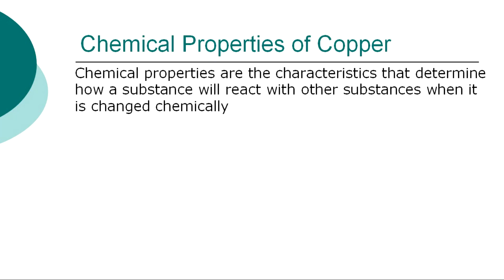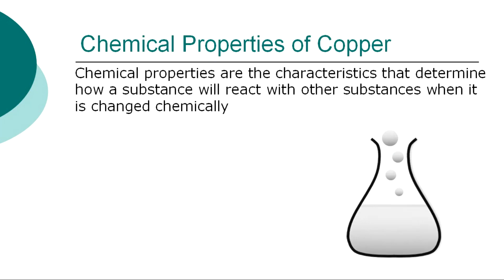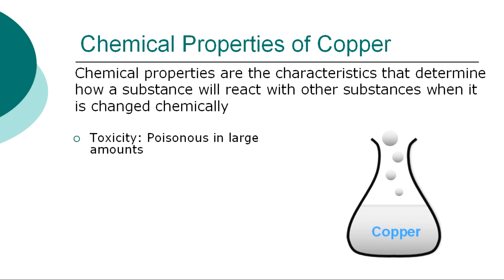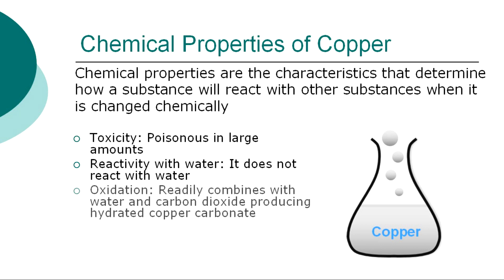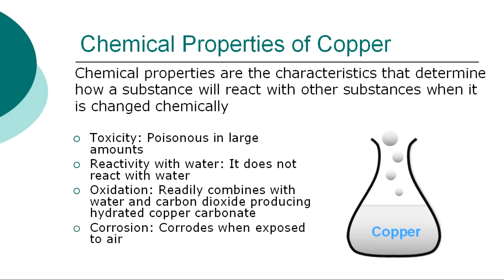The chemical properties are the characteristics that determine how copper will react with other substances when it is changed chemically. The chemical properties of copper include: toxicity — poisonous in large amounts; reactivity with water — it does not react with water; oxidation — readily combines with water and carbon dioxide producing hydrated copper carbonate; and corrosion — corrodes when exposed to air.